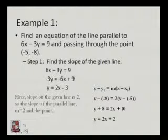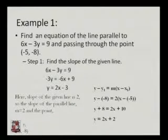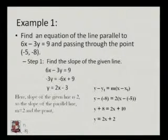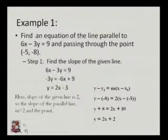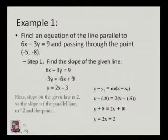This is the equation of the required line passing through (-5, -8) and parallel to 6x minus 3y equals 9. We can also write this equation in general form as 2x minus y plus 2 equals 0, which is of the form ax plus by plus c equals 0. Both the slope-intercept form y equals 2x plus 2 and the general form 2x minus y plus 2 equals 0 are acceptable answers.